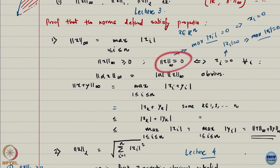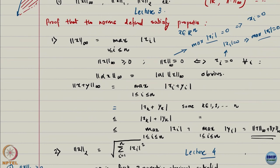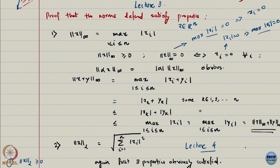If the infinity norm is 0, it means that the maximum absolute value is 0. Because we are talking absolute values, every other element also has to have 0 in absolute value. Therefore, infinity norm equal to 0 implies the vector itself is a zero vector. Scalar multiplication is obvious. The only key thing — in fact, in most of these proofs — the only thing you really have to prove is the triangle inequality.